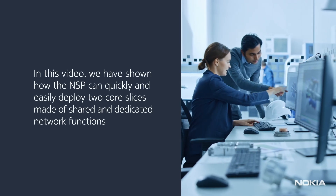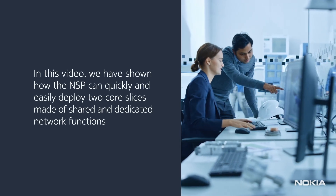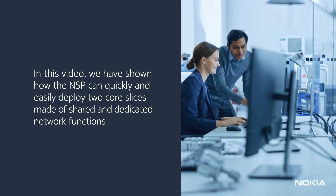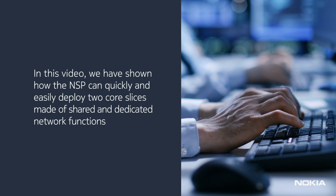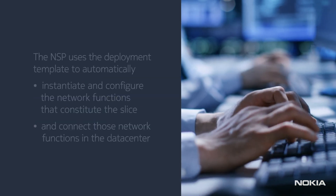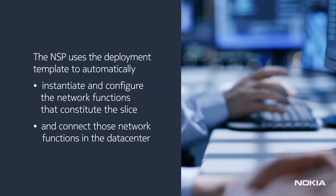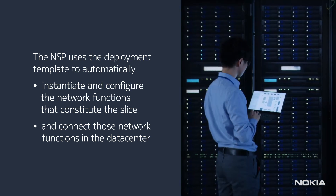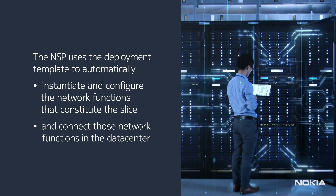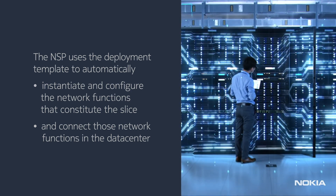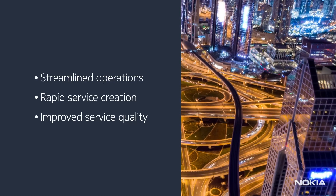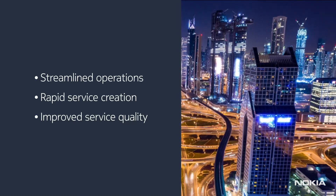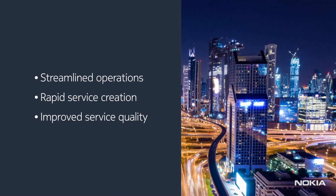In this video, we have shown how the NSP can quickly and easily deploy two core slices made of shared and dedicated network functions. Each core network slice is created through the click of a button. The NSP uses deployment templates to automatically instantiate and configure the network functions that constitute the slice and connect them in the data center. This level of automation effectively streamlines operations to meet expectations for service velocity, reduce errors, and improve service quality.